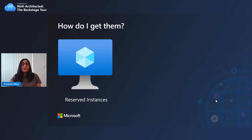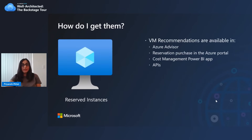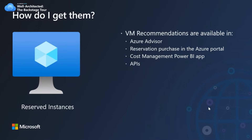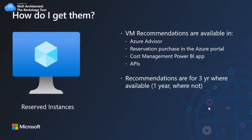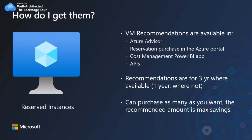How do you get these recommendations and purchase VM reserved instances? VM recommendations are available in Azure Advisor, in the reservation purchase experience in the Azure portal, in the Cost Management Power BI app, and also through our APIs. When you purchase the quantity that Azure recommends, that will give you the maximum savings possible. The recommendation quantity and savings are for a three-year reservation where available; if a three-year reservation isn't sold for the service, the recommendation is calculated using one-year reservation price.